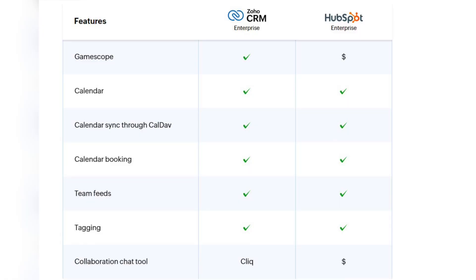The last criteria I want to talk about is team collaboration. Both Zoho CRM and HubSpot offer a wide range of collaboration features, but in HubSpot, Gamescope and the collaboration chat tool are additional paid add-ons. In Zoho CRM, the collaboration chat tool is Zoho Cliq, which integrates within Zoho CRM and has an absolutely free version.